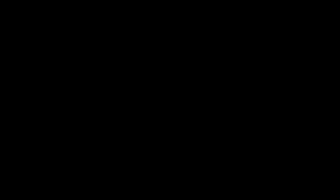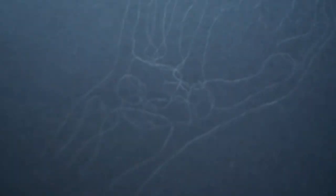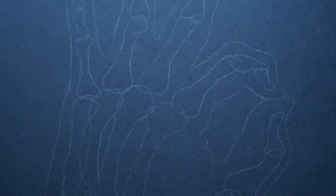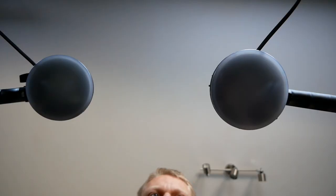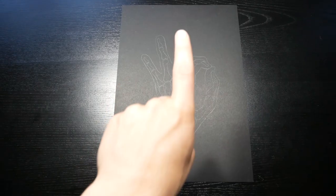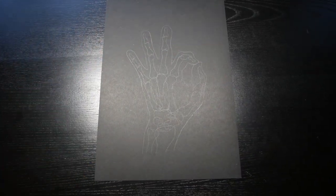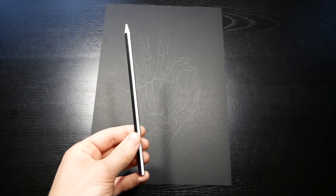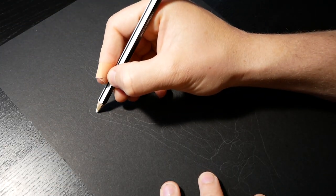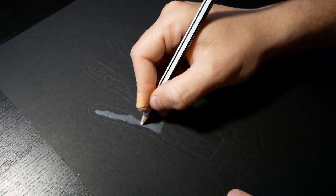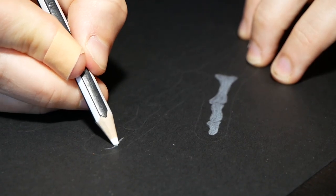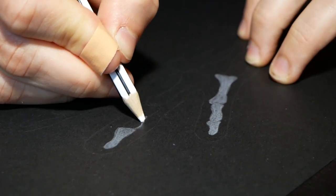Sketch done. So the first step in making this x-ray drawing will involve a white colored pencil. The objective for this first step is very basic. I'm simply coloring in all the bones in a solid white color.